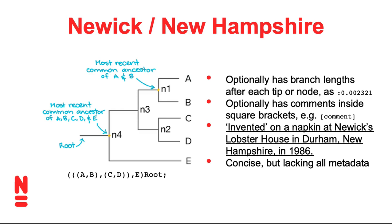There are a couple of extra things you can put in a Newick tree description. After each tip or closing parenthesis, you can put a colon and then a number, and that number means the branch length. Besides that, there's only one more thing you can normally put in Newick format: something between square brackets, which is interpreted as just a comment for human readers that a program is supposed to do nothing with. So there's almost nothing additional that you can say about your tree — what do the tips mean, what is the branch support, what do the nodes mean? There's no metadata.